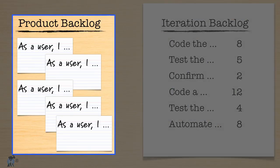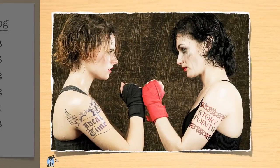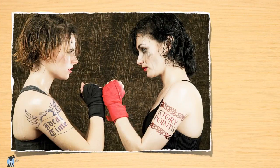Most teams tend to write their Product Backlog in the form of user stories — short, simple statements told from the perspective of a user, as I've shown here. Throughout this module, we're going to look at two different units that Agile teams commonly use for estimating their Product Backlogs: Story Points and Ideal Days.